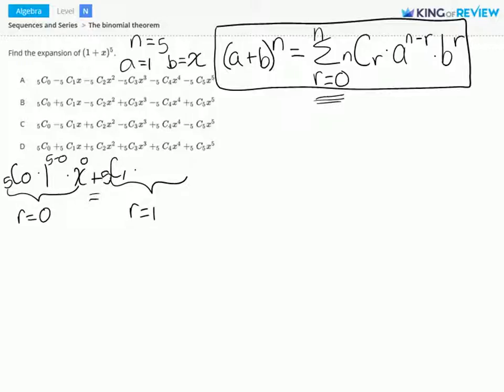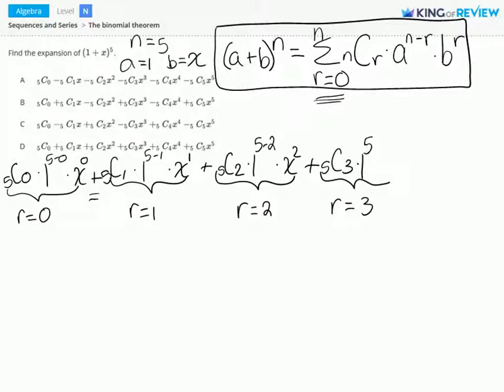5C1 times 1 to the 5 minus 1 power times x to the first power plus our value when r is equal to 2. This is 5C2 times 1 to the 5 minus 2 power times x squared plus the value when r is equal to 3. This is 5C3 times 1 to the 5 minus 3 power times x to the third power. And next we're going to add this.